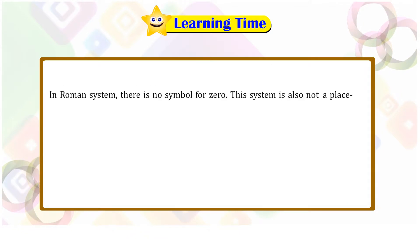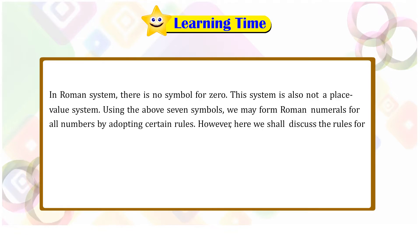In Roman system, there is no symbol for zero. This system is also not a place value system. Using the above seven symbols, we may form Roman numerals for all numbers by adopting certain rules. However, here we shall discuss the rules for usage of first three symbols and form Roman numerals up to thirty-nine.